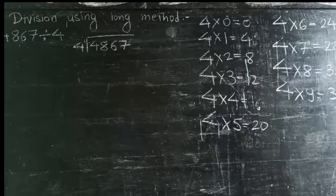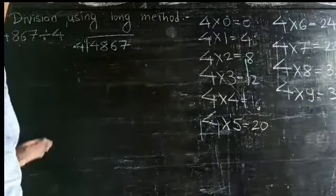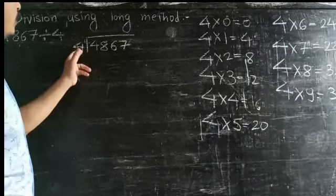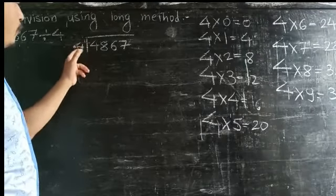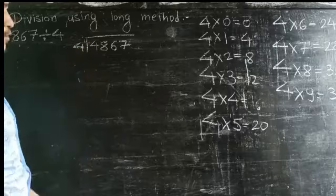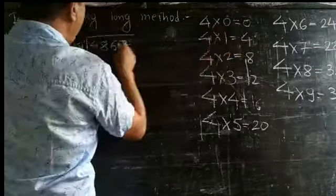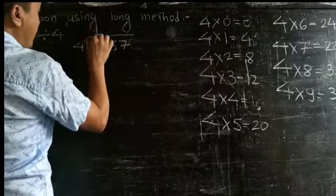Now look at the question. First you have to start dividing from the left-hand side. Now 4 is dividing 4, 4 divided by 4. Look at the tables of 4: 0×4=0, 4×1=4.